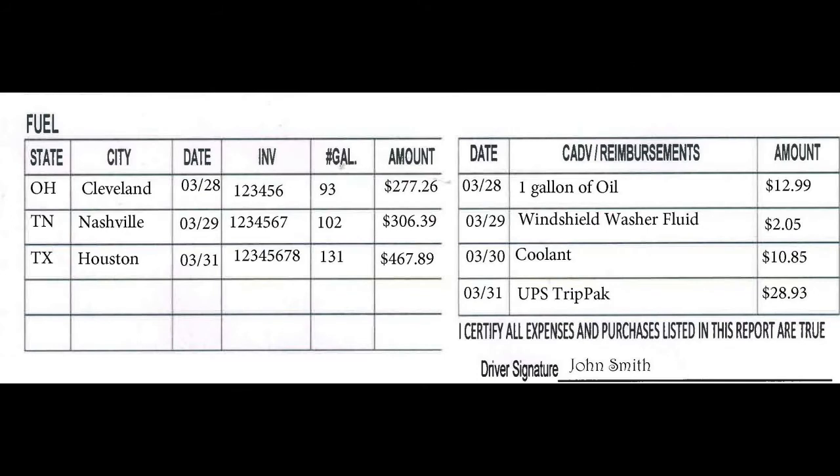The next section of the driver trip report is where you would record fuel and any approved reimbursable expenses that you may have purchased and would like to be reimbursed for. On the left where fuel is recorded, make sure that you write the state and city in which you have fueled, the date, the invoice number — which is typically located on the receipt — how many gallons you filled up, and the amount for each transaction. On the right side, you would write down the date of the item that was purchased, a short description of the item, and the amount that it costs. Once you have recorded everything, please place all of the corresponding receipts in the envelope.